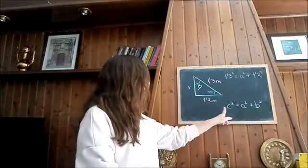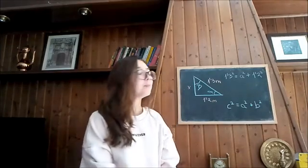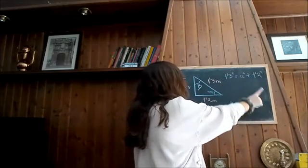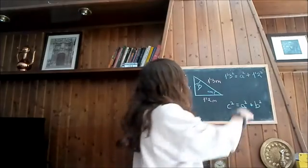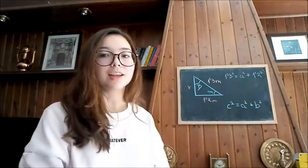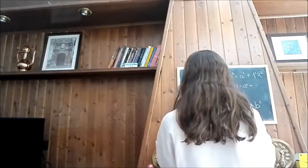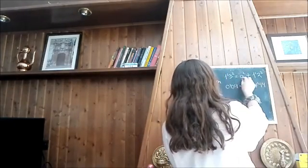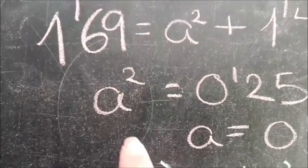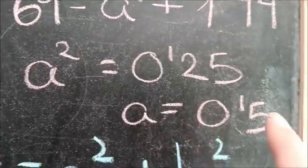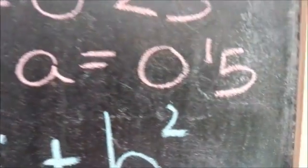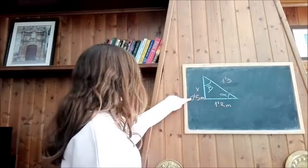Now we just need to replace C and B with the information that we know already. C, which is the hypotenuse, is 1.3 meters. A, which is the opposite, is the number that we want to calculate. And B is the adjacent, that is 1.2 meters. Now we just need to calculate. That means that the opposite is 0.5 meters.